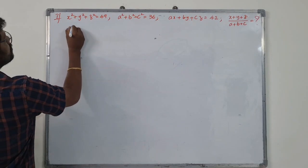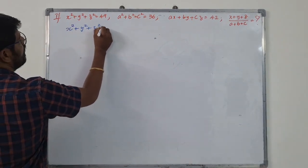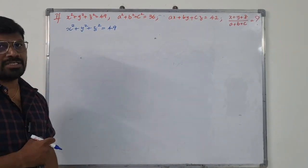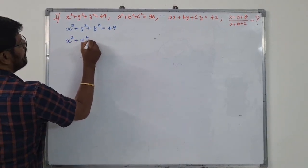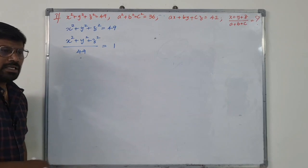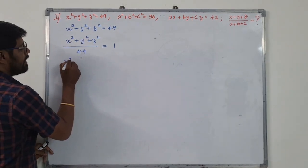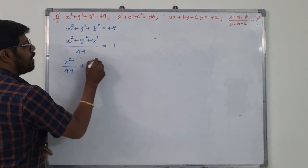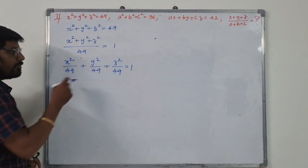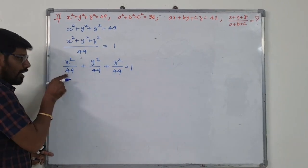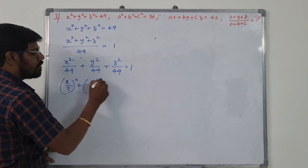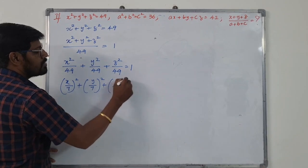The first equation is x squared plus y squared plus z squared equals 49. Dividing both sides by 49: x squared by 49 plus y squared by 49 plus z squared by 49 equals 1. Since 49 is a perfect square, this becomes (x by 7) whole squared plus (y by 7) whole squared plus (z by 7) whole squared equals 1.